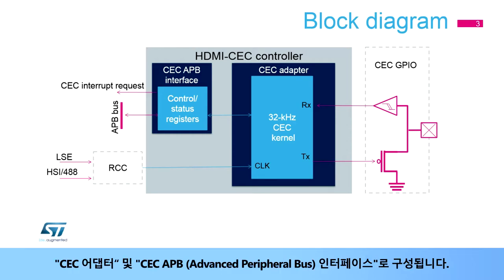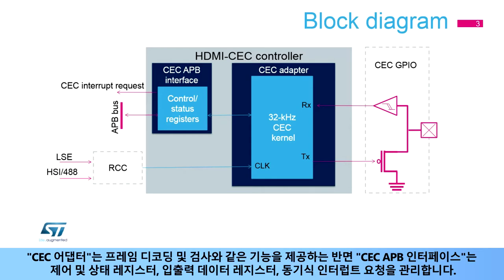The controller consists of a CEC adapter and a CEC Advanced Peripheral Bus or APB interface. The CEC adapter provides functions such as frame decoding and checking, while the CEC APB interface manages the control and status registers, data in-registers and data out-registers, and synchronous interrupt requests.